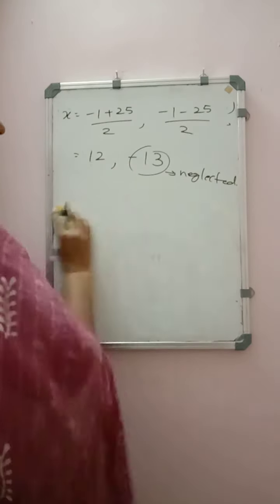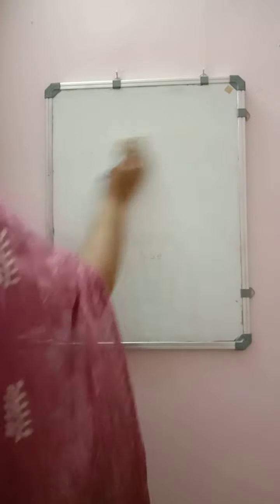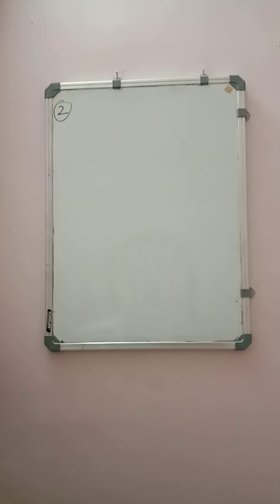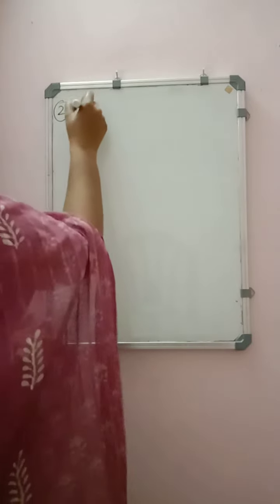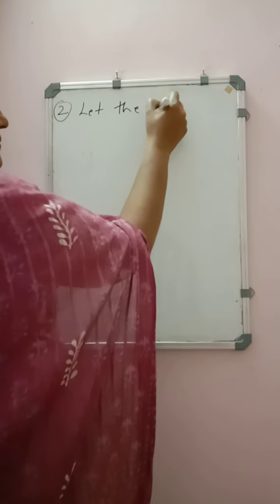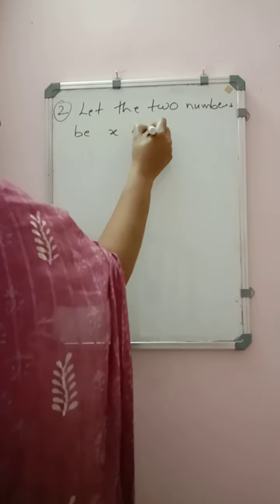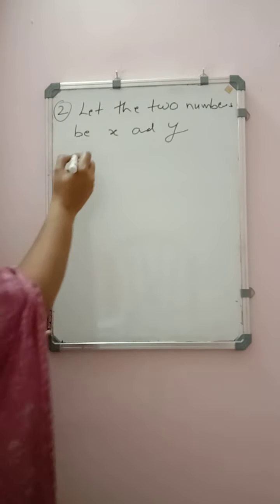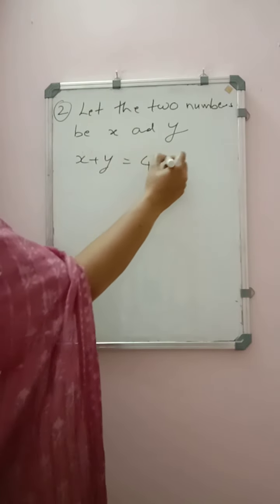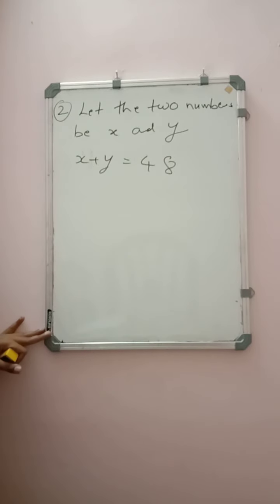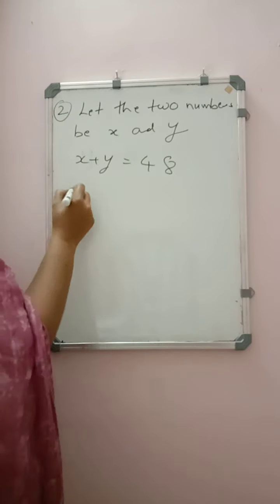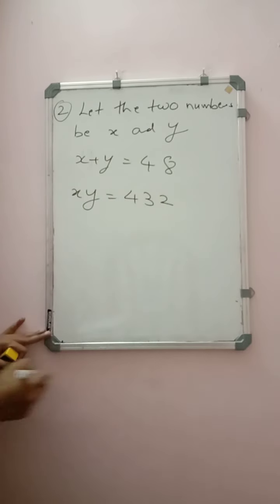I hope you all now know how to solve the quadratic equation. From the next question onwards I will write the equation and you can solve it. Moving on to the second question: the sum of two numbers is 48. We will take the two numbers as x and y. Let the two numbers be x and y. Their sum gives x + y = 48, and their product is xy = 432.